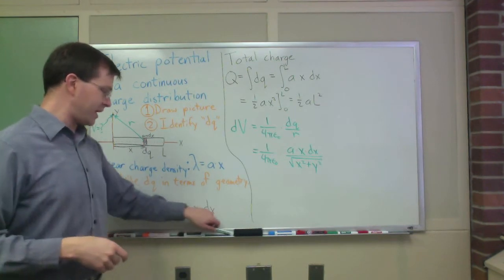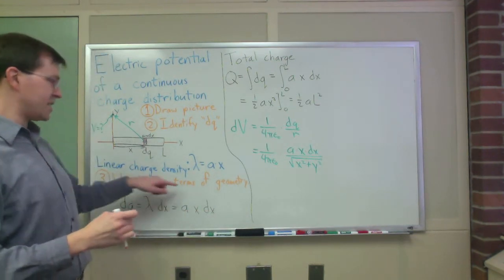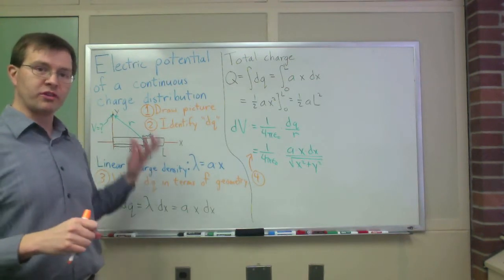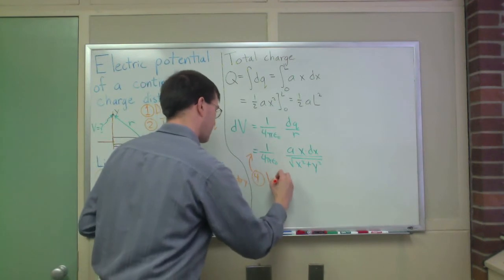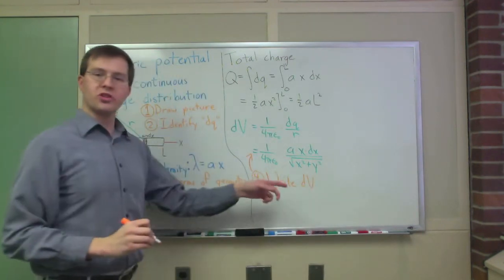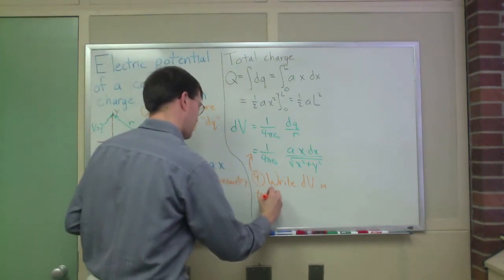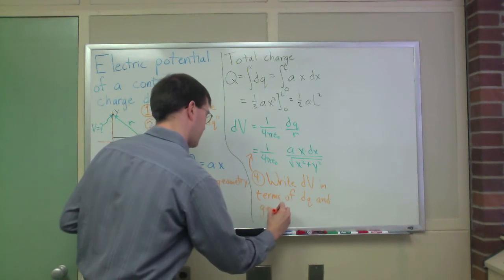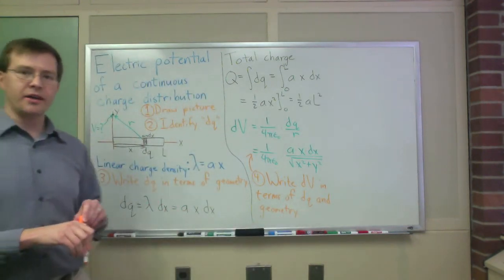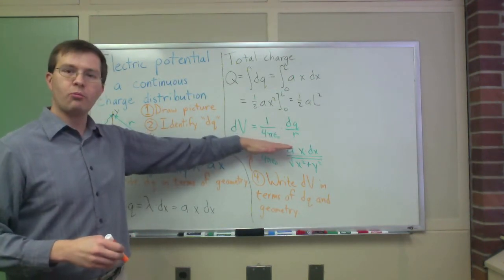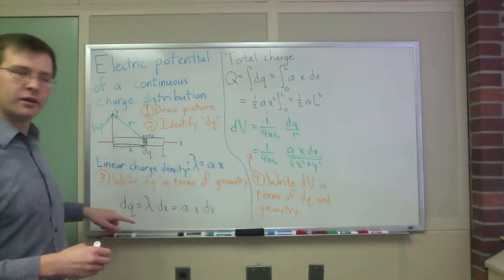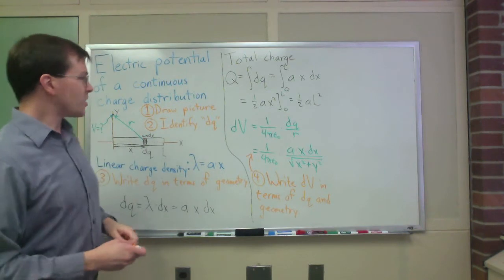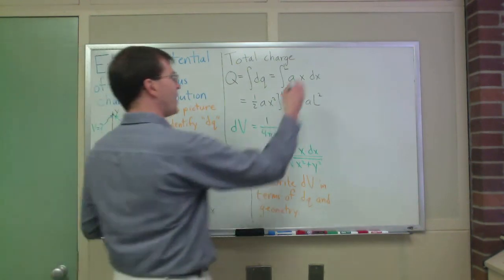I've now anticipated what my next step is. Step four in doing a continuous charge distribution problem for potential is to write the tiny contribution to the total potential in terms of dq and the geometry of the problem. That's what we've done. We've taken the generic Coulomb's law equation for a point charge, and we've said I know what dq is for my particular problem from earlier, and I know what r is for my particular problem from my picture.